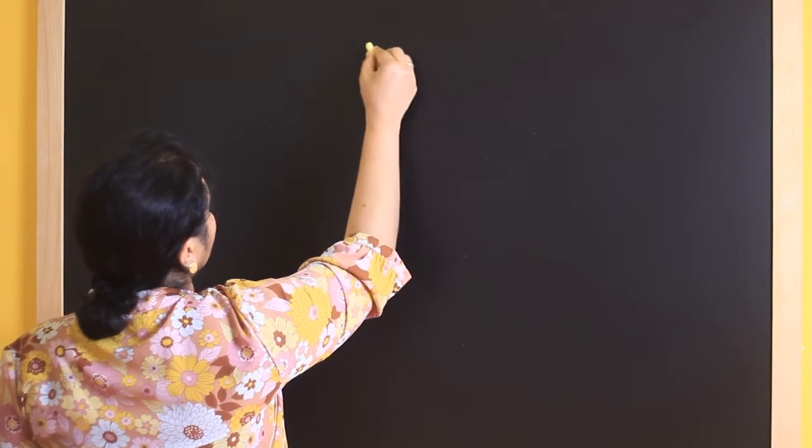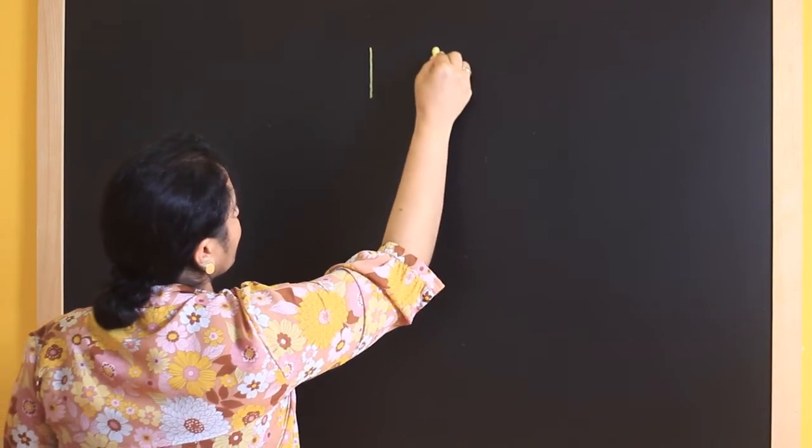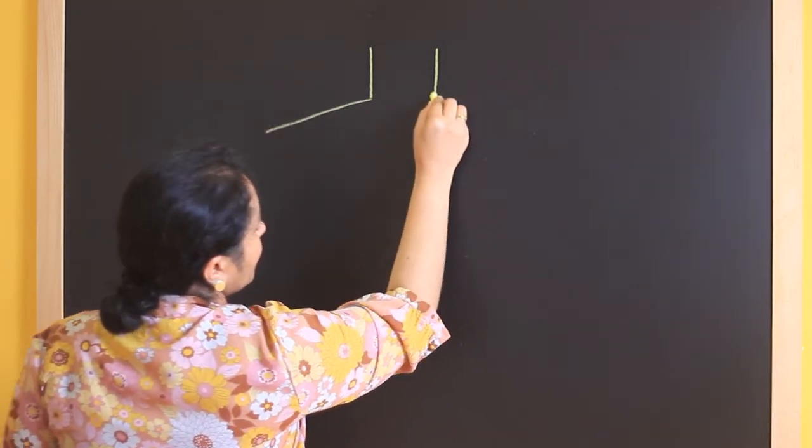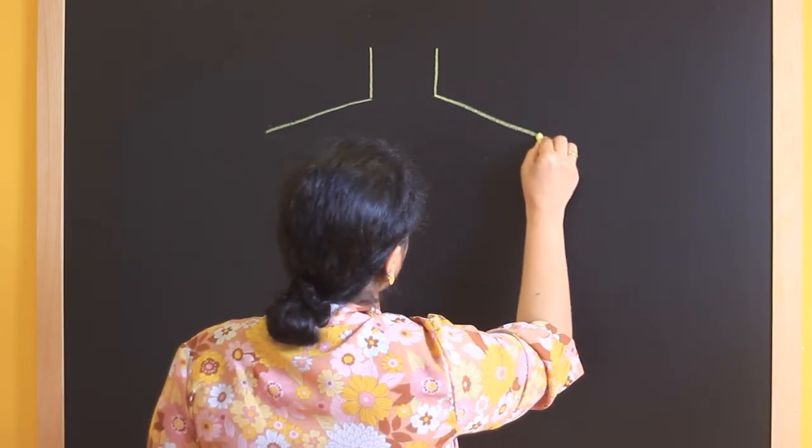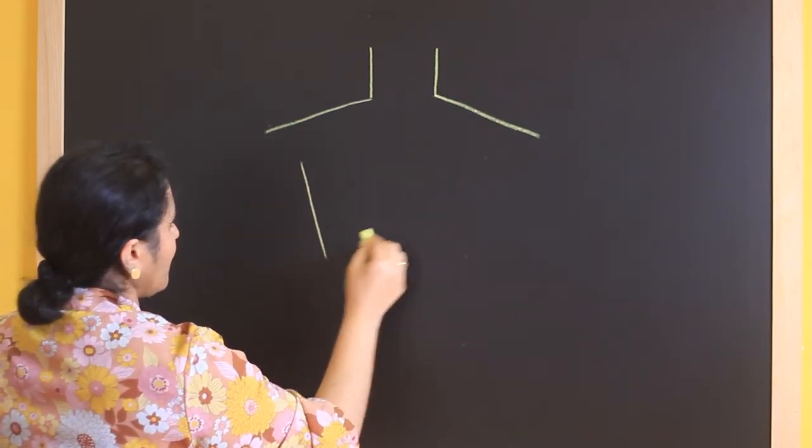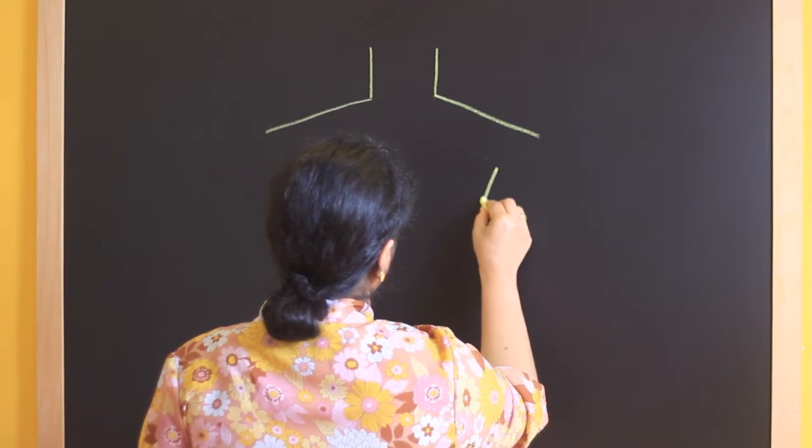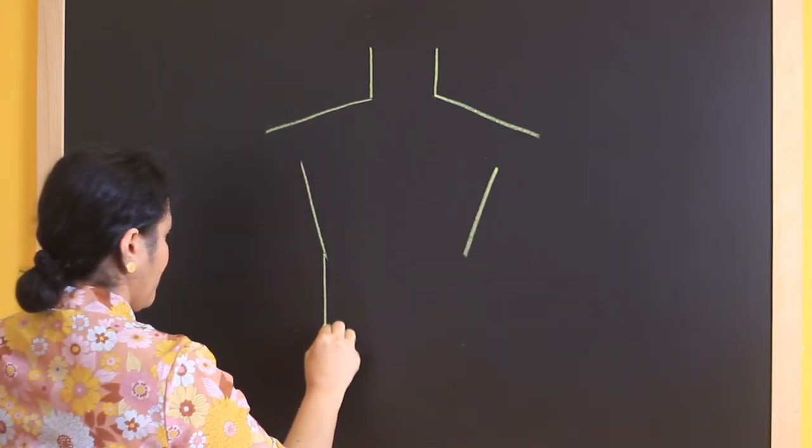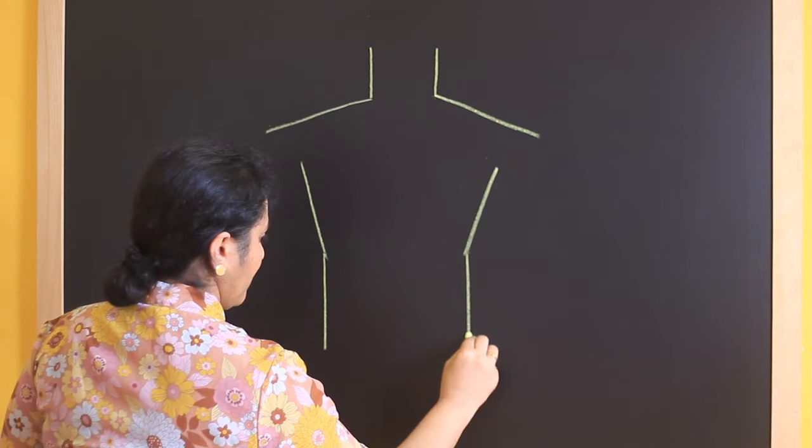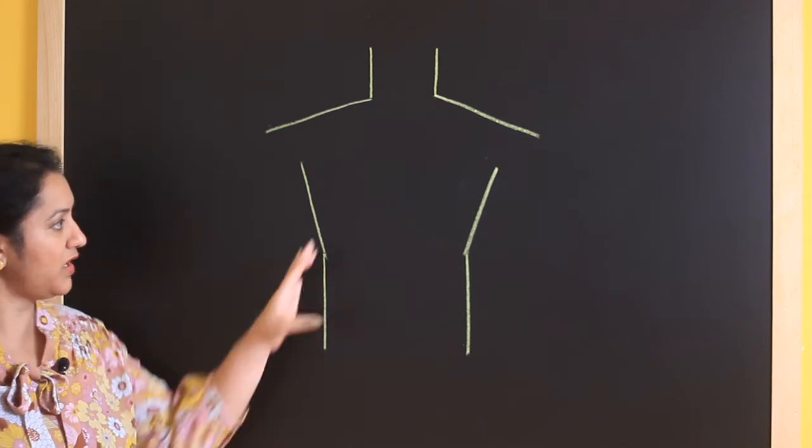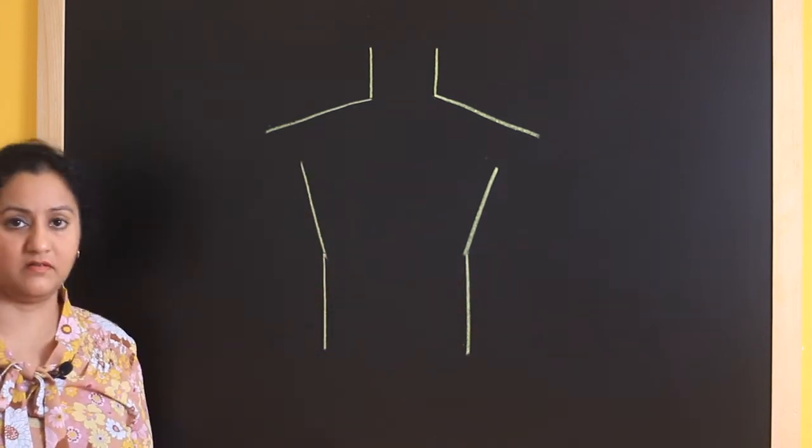We begin by giving an outline to the human body. Let's start with the neck. So this is how we can draw the outline of the human body and all other parts have to be done in the inner region.